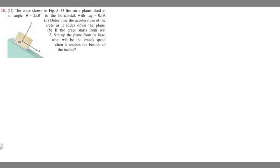In this problem, we're told the crate shown lies on a plane tilted at an angle theta equals 25 degrees to the horizontal, with mu sub k equal to 0.19. Part A: determine the acceleration of the crate as it slides down the plane. Part B: if the crate starts from rest 8.15 meters up the plane from its base, what will be the crate's speed when it reaches the bottom of the incline?